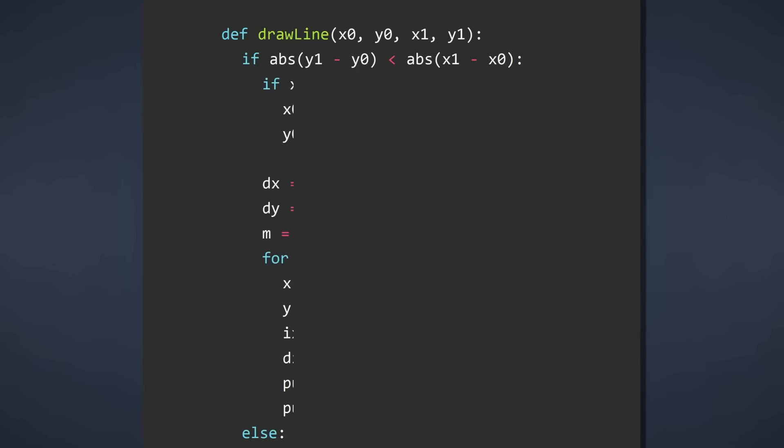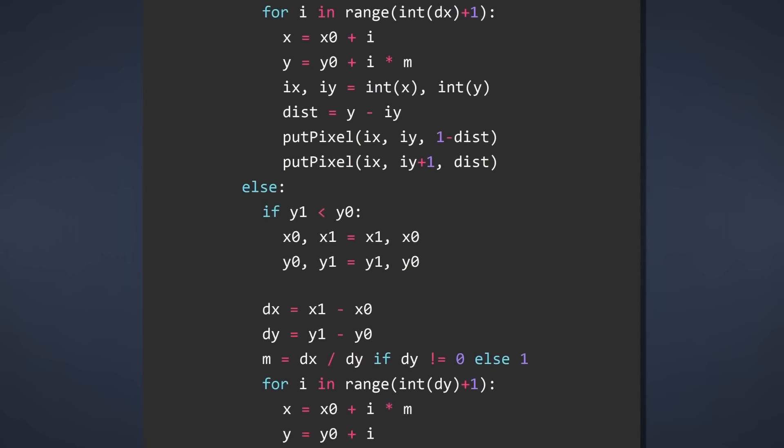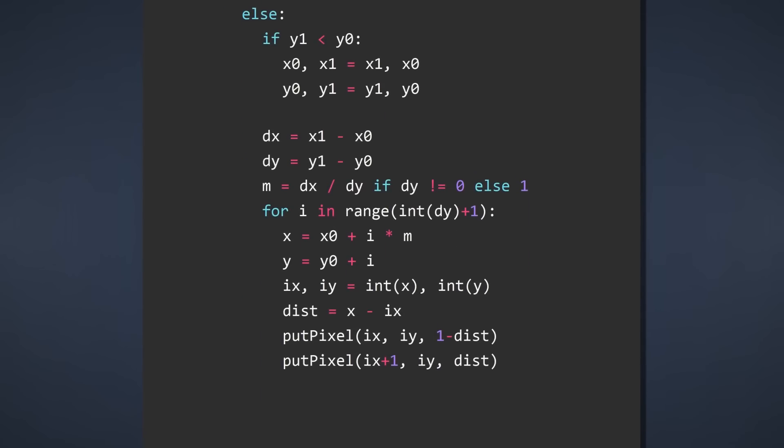we have a horizontal line and do exactly what we've done before. In the else case, we do exactly the same thing, but swap the purpose of the x and y coordinates.